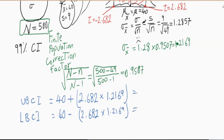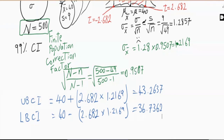The upper bound is 43.2637 and the lower bound is 36.7362. A student asked: when do we know to use the correction factor? The answer: when we know the size of the population. Thank you — we'll see you next time.